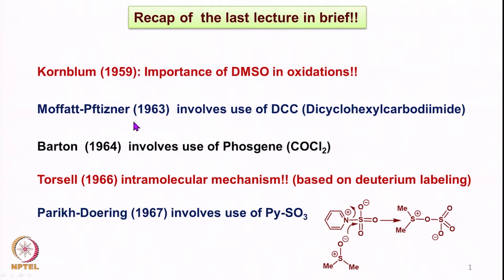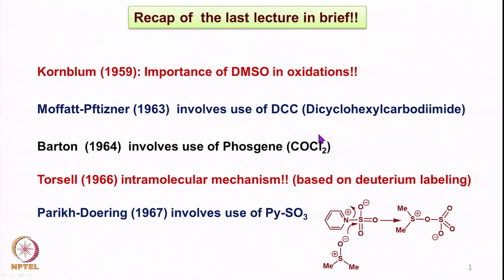We also discussed Moffat-Pittner oxidation, which involved the use of dicyclohexylcarbodiimide, which activated DMSO and allowed the formation of an intermediate that reacts with the alcohol and eventually leads to the formation of the carbonyl compound. As an extension, Barton used phosgene to activate DMSO for the oxidation of alcohols.